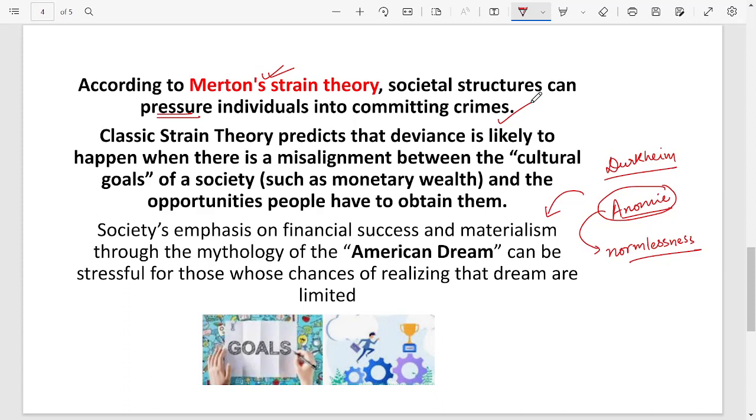As we know, the classic strain theory tells us that deviance and crime happen when people are not able to achieve the goals that they want to reach. For example, you want to be a doctor but you don't have those situations, you don't have means, you don't have money, so you fail to become a doctor. Rather, you become, let's say, some criminal like a robber or a decoy thief.